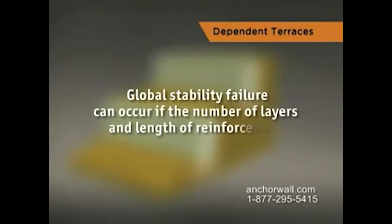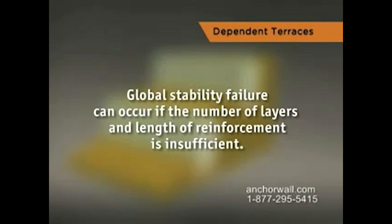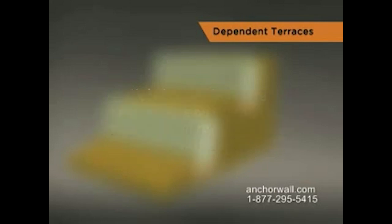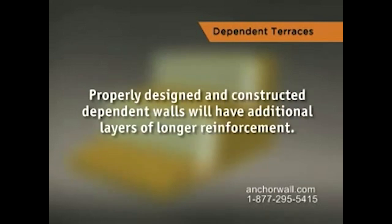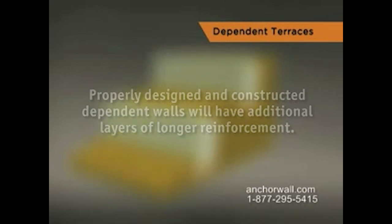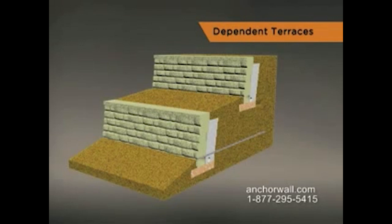Global stability failure can occur if the number of layers and length of reinforcement is not sufficient. Properly designed and constructed dependent walls will have additional layers of longer reinforcement. The additional reinforcement pushes the global stability failure plane deeper into the soil mass, making global stability failure less likely to occur.